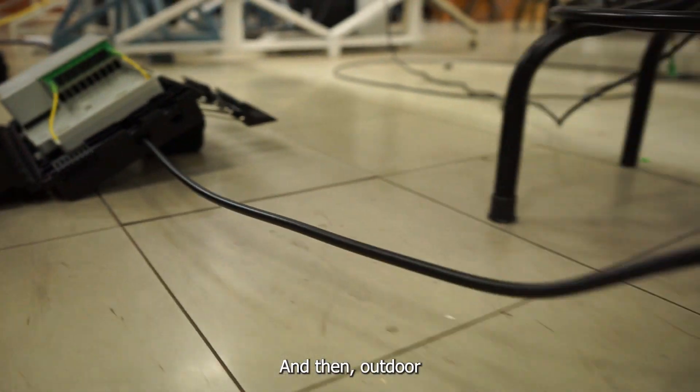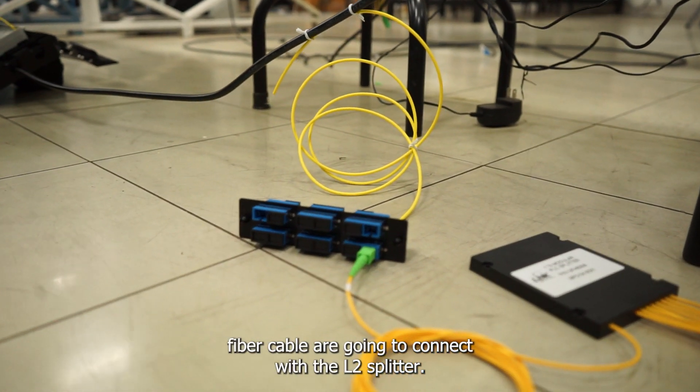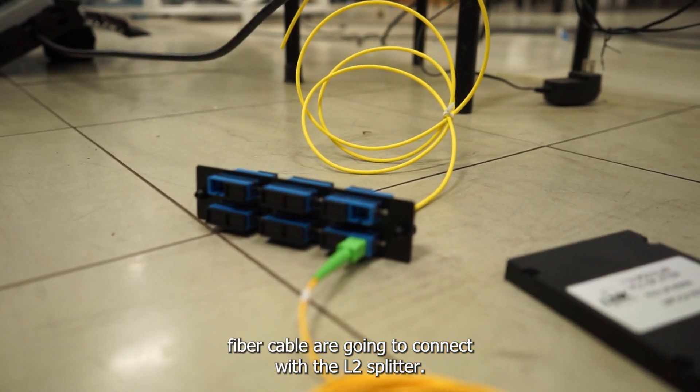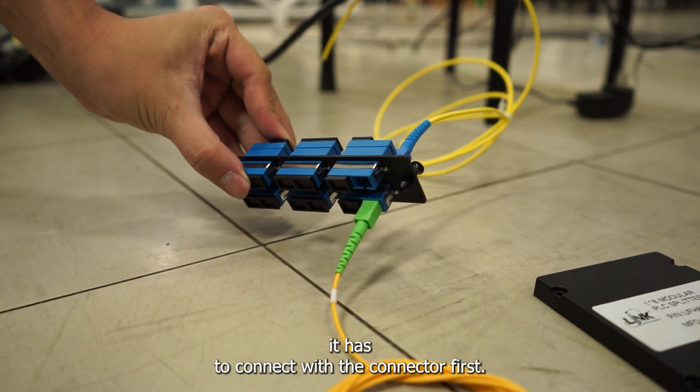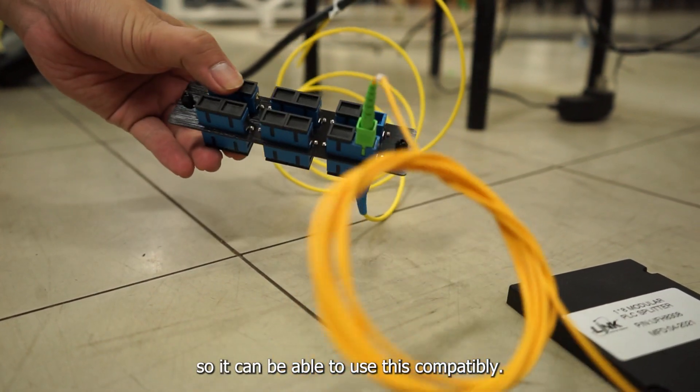The outdoor fiber cable connects to the outdoor splitter. However, it must connect with the connector first so it can be used compatibly.